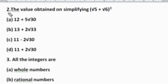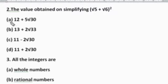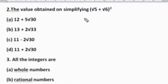Question 2: The value obtained on simplifying (√5 + √6)² is — Option A: 12 + 5√30, Option B: 13 + 2√33, Option C: 11 − 2√30, and Option D: 11 + 2√30.